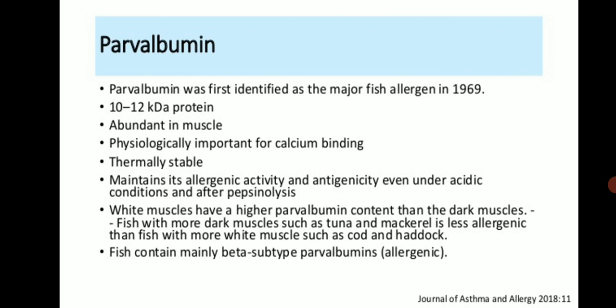White muscle has higher parvalbumin content than dark muscle. Fish with more dark muscle, such as tuna and mackerel, are less allergenic than fish with more white muscle, such as cod and haddock. Fish contain mainly the beta subtype of parvalbumin allergen.